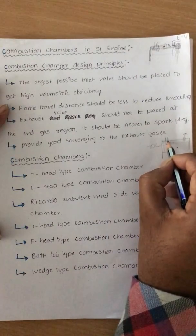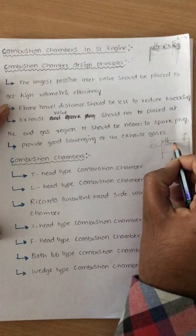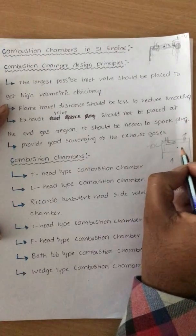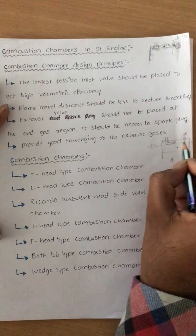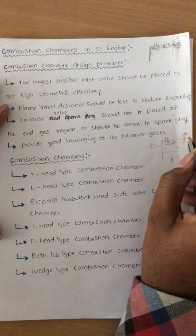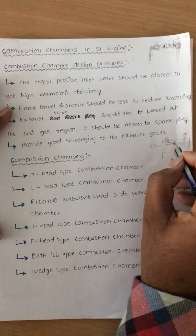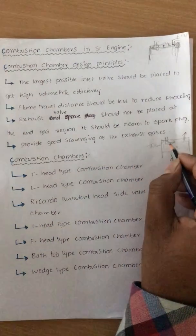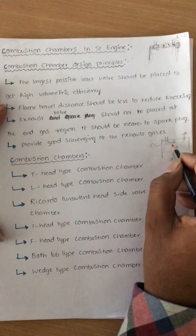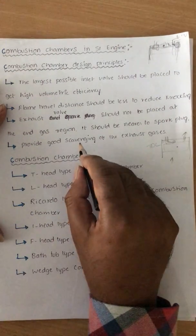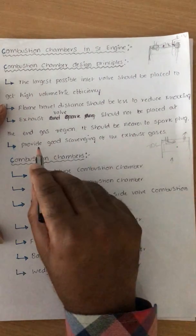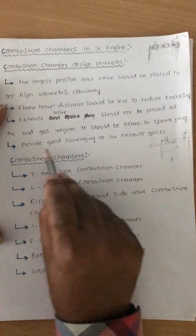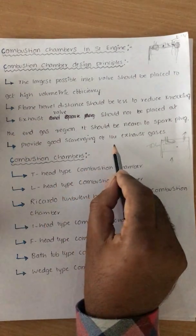If we provide a bend to the inlet valve, the fresh charge will push the exhaust gases out. At the valve overlap position, both suction and exhaust are taking place simultaneously — both the valves are open. This process is called scavenging, also referred to as valve overlap. The combustion chamber should be designed in such a way that it achieves good scavenging of exhaust gases.